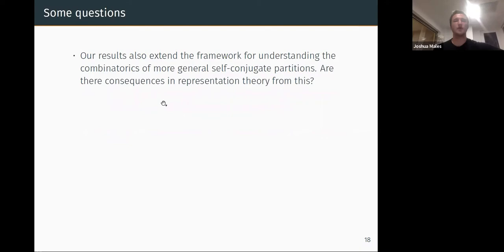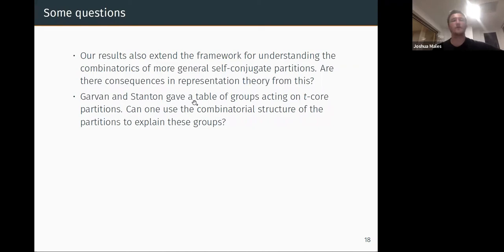So maybe I'll end briefly with just some open questions that I would like to understand more and maybe people here could tell me about. The results in this paper extend the framework for understanding the combinatorics of more general self-conjugate partitions. So our paper basically gives a complete description of self-conjugate 7-core partitions. And the same thing can be done, the same process for any t. So I can always do the same process we do in this paper and come up with a complete description of self-conjugate partitions. So what are the consequences of this? This is something I haven't had a chance to think about too much. Are there consequences in representation theory, for example?